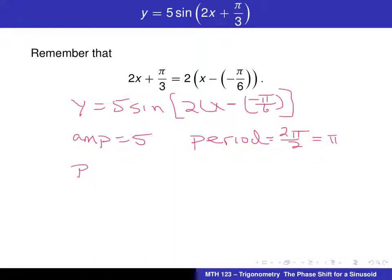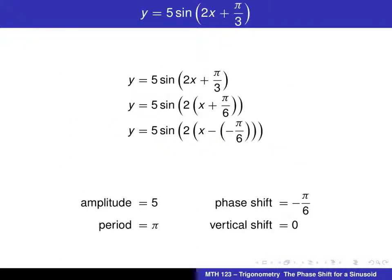And the phase shift is negative π over 6. So we can see that what would happen is the sine curve would shift to the left, π over 6 units. So there we've determined these that we want.